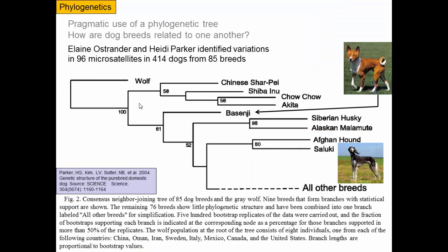A paper from just a few years ago had authors collect 85 different breeds of dogs from 400 individuals. They looked at microsatellites, which are DNA-based markers, and made a phylogeny. The phylogeny shows all domesticated dogs with a bootstrap value of 100, indicating that in 100% of their trees all domesticated dogs are the result of a single evolutionary lineage — dogs were domesticated once — and wolf is the outgroup. Shar-Pei, Shiba Inu, Chow Chow, and Akita form their own separate group.